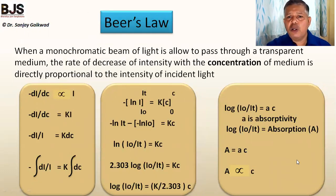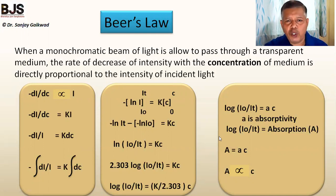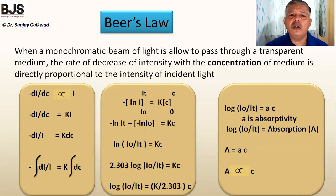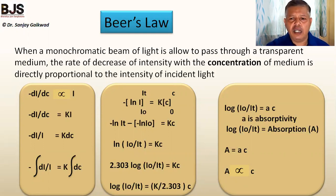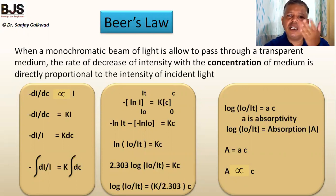Beer's Law is a similar, important law related to concentration. When monochromatic light falls on a transparent medium, the rate of decrease of intensity with the concentration of the medium is directly proportional to the intensity of incident light: −dI/dc ∝ I. Solving this equation, similar to Lambert's Law, it is observed that the absorbance of the solution is directly proportional to the concentration. As concentration increases, absorbance increases because the number of molecules in the vicinity of the light beam increases.